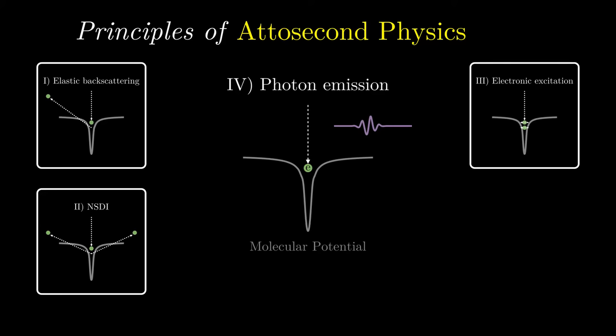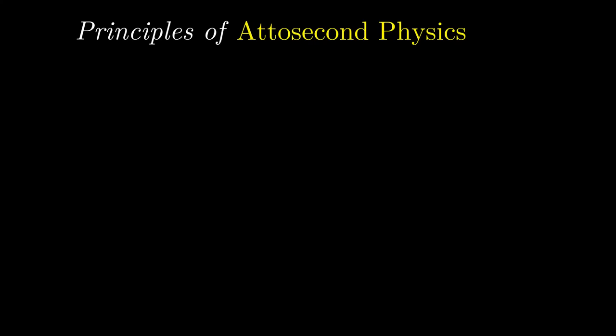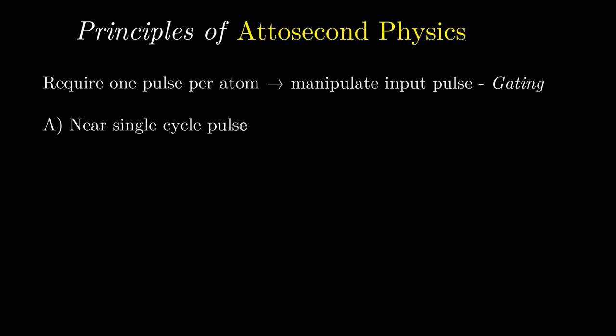Thirdly, the electron could be absorbed and cause internal excitation. And the last option is that the electron is absorbed by the parent atom and the electron releases its energy in the form of a single photon. With this fourth eventuality, our attosecond pulse is born. Finally, how do we ensure that there is exactly one pulse released per atom? This control is referred to as gating, and two gating options will be discussed here.